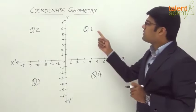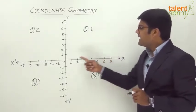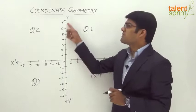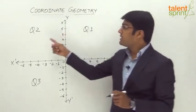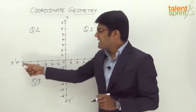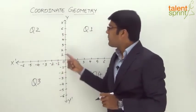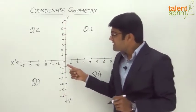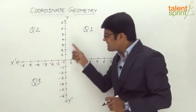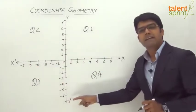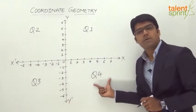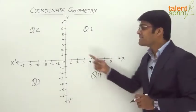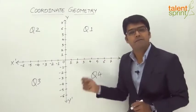In quadrant 1 we have the positive x-axis and the positive y-axis. In quadrant 2 we have the negative x-axis with the positive y-axis. Quadrant 3 covers the region described by negative x-axis and negative y-axis, whereas quadrant 4 covers the region described by positive x-axis with negative y-axis.